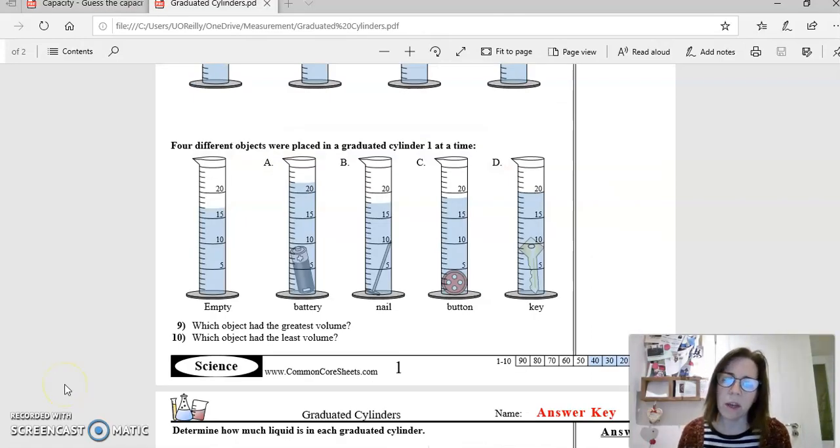Hi guys, one thing that I actually neglected to mention in the last video. On the last part of this worksheet here, you'll see the first graduated cylinder is empty, as in there's no object in it. It has water in it, but no object.